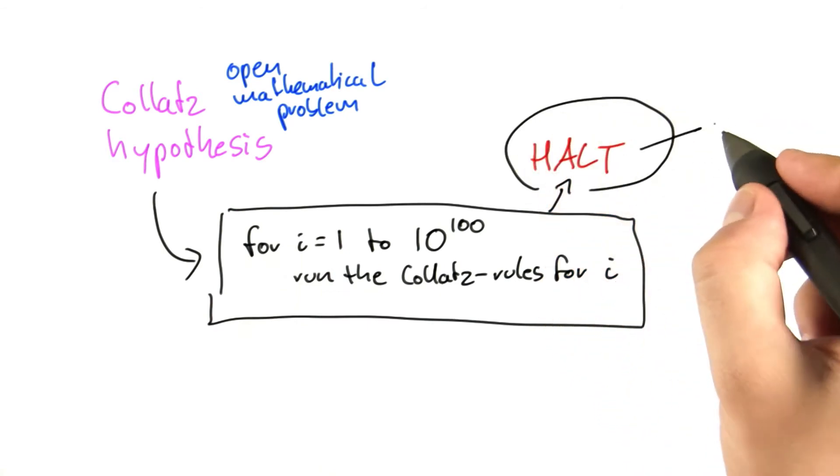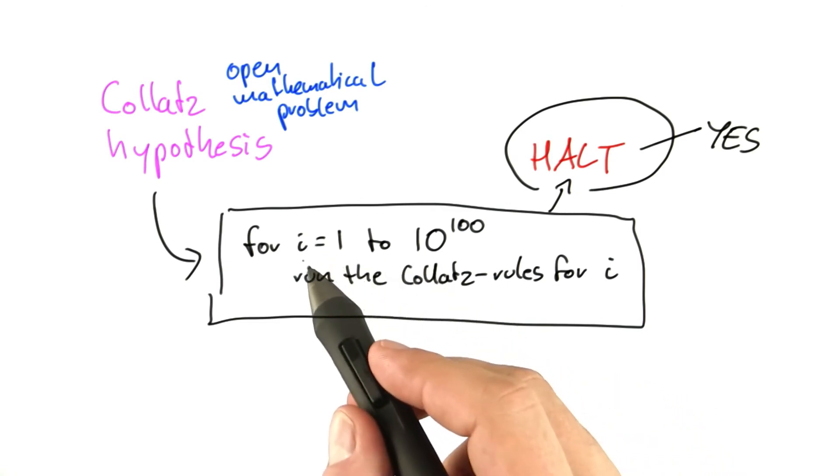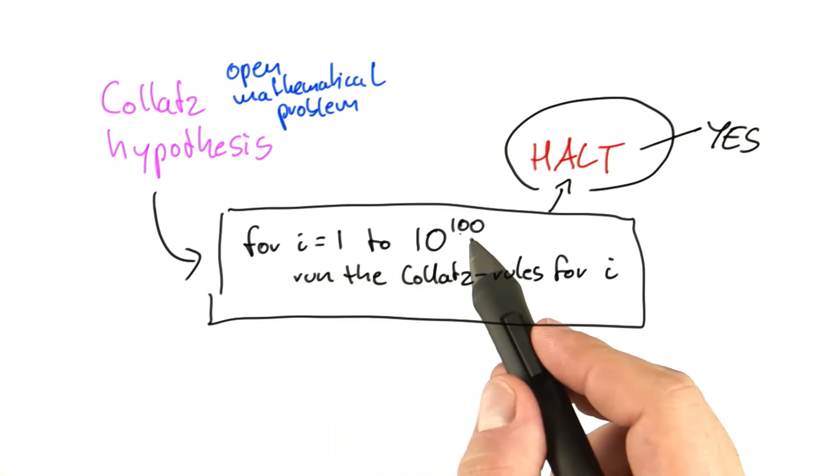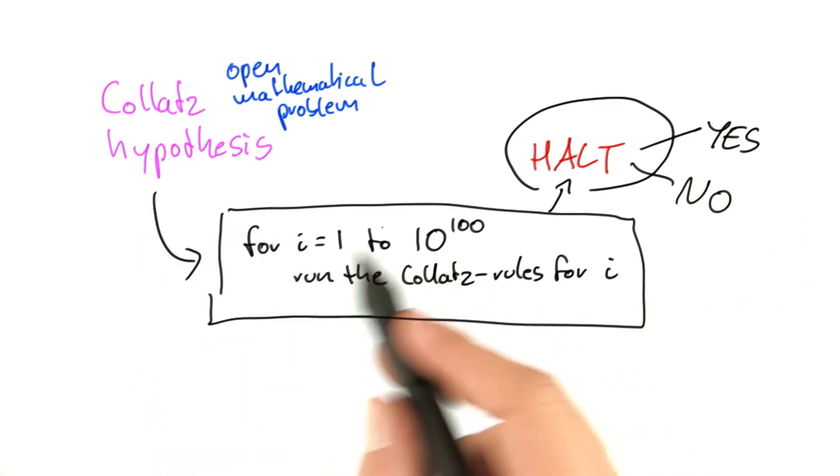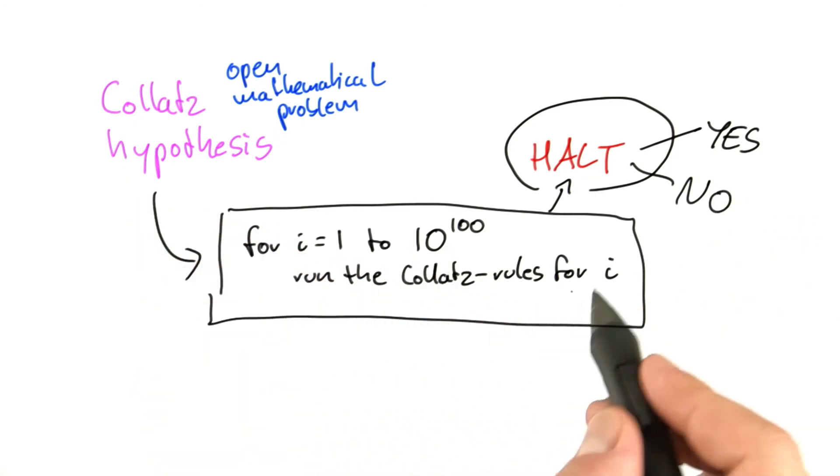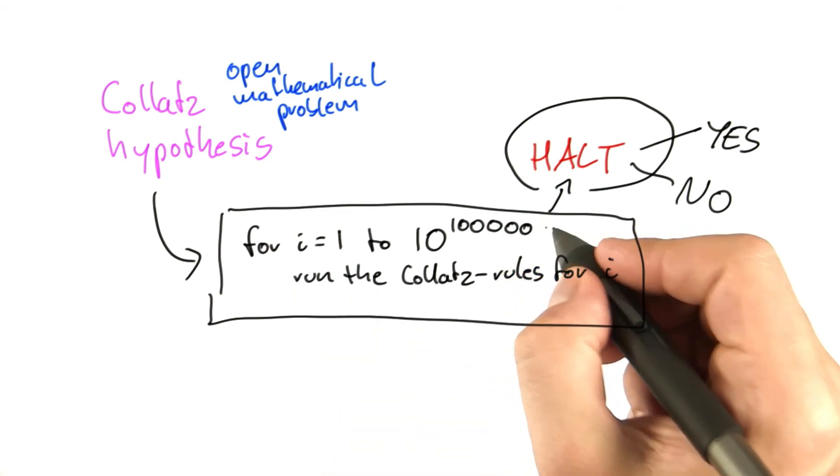And now if the halting algorithm says yes, then this means that the Collatz hypothesis is true for any number from 1 to 10 to the power of 100. And if it says no, then it means that there is some number for which the Collatz hypothesis is not true, which means that this part here would go into an infinite loop. And then we can easily check this for larger and larger and larger numbers.